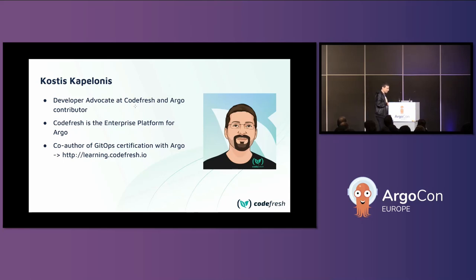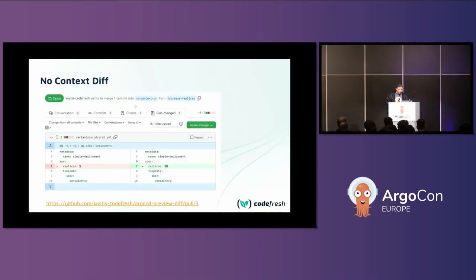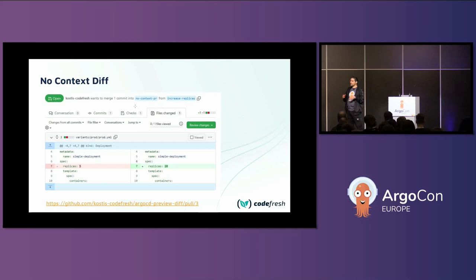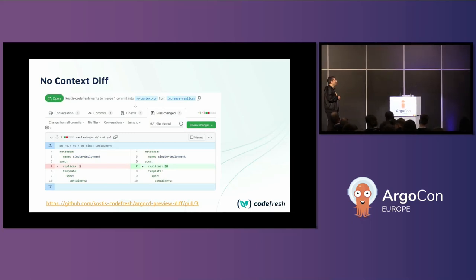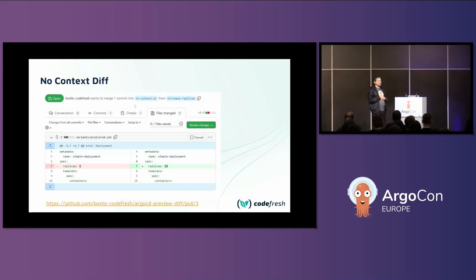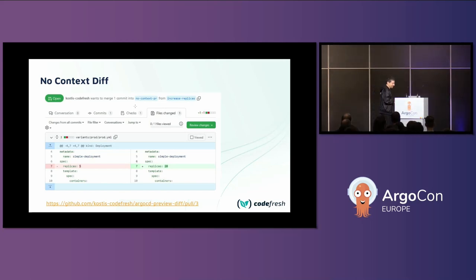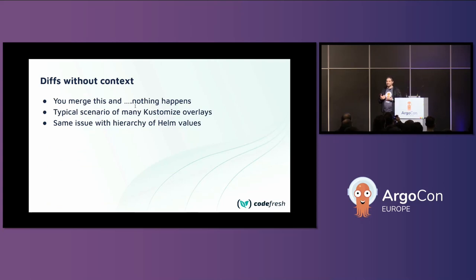I'm also the co-author of the first ever GitOps Argo CD certification, which you can find linked here. What are we going to talk about today? It's a very specific problem. Let's say you have finished your Argo CD installation — it works, it's secure, it's fine — and you start looking at pull requests. I'm sitting at my computer and a pull request comes in.